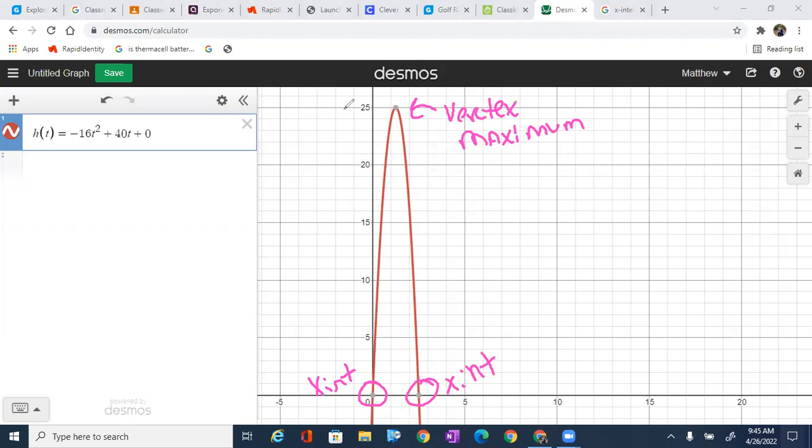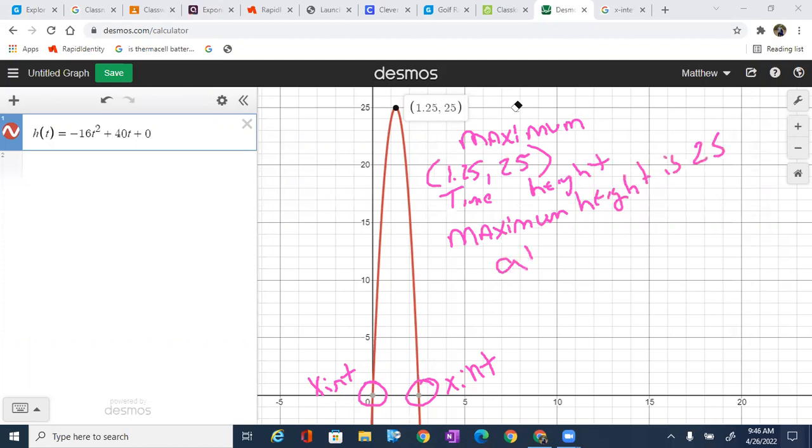So what is the vertex? Well, the vertex is showing us that it is 1.25, 25. And what does 1.25, 25 mean? Well, the input was time and 25 was the height. So that means the maximum height is 25 at 1.25 seconds. Well, awesome.